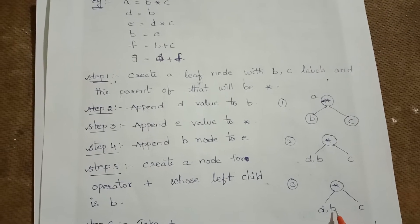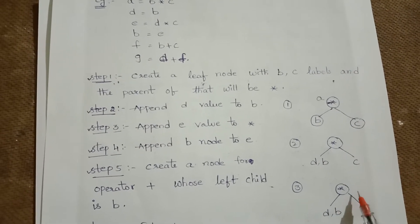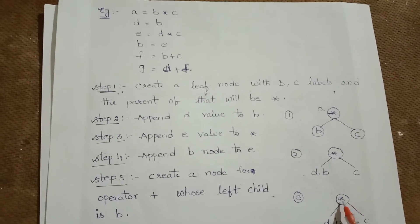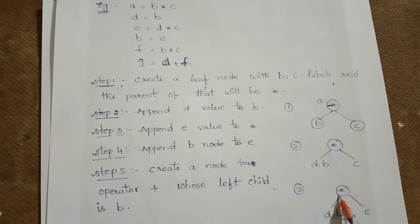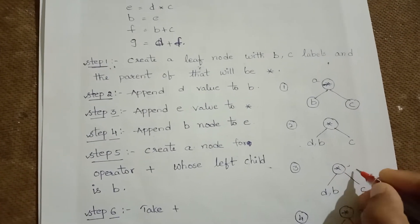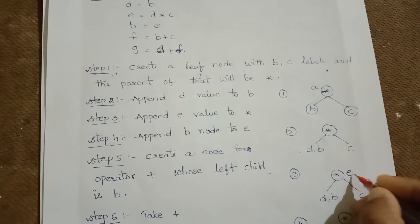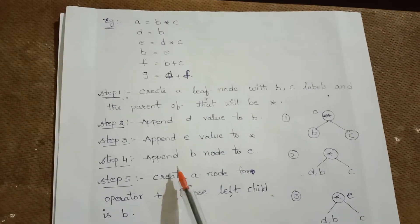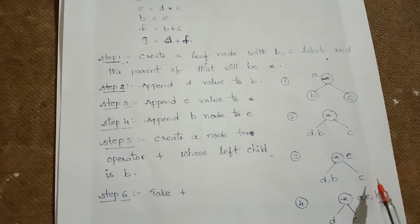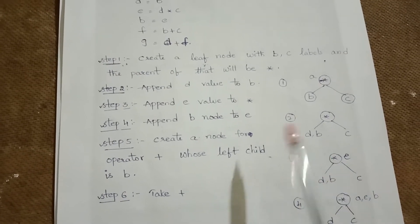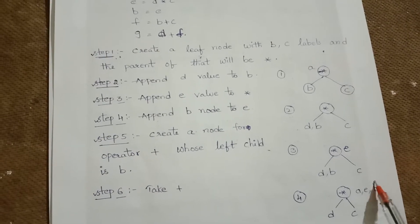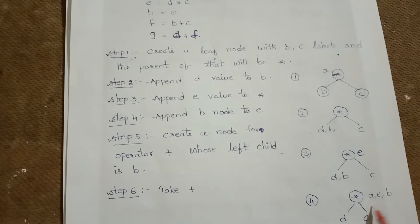Since D is already present, we append E to the star node. In step four, B = E. Since E has already been created, we append the B node to E.